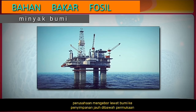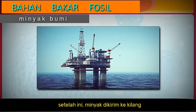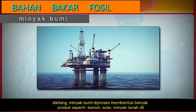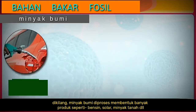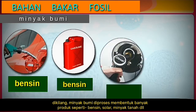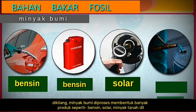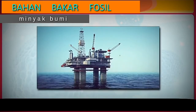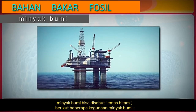Companies drill through the earth to the deposits deep below the surface. After this, the oil is sent to refineries. At the refineries, petroleum is processed to form many products like petrol, gasoline, diesel, kerosene, etc. Petroleum is also known as black gold.